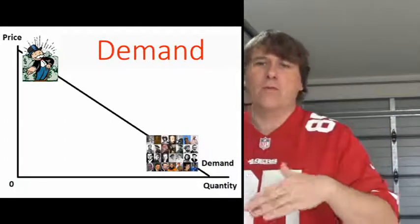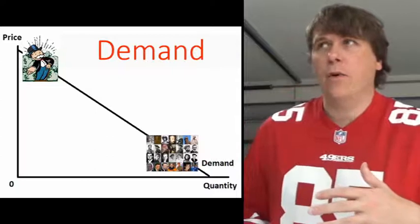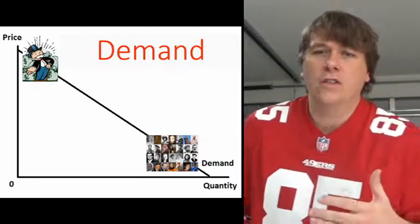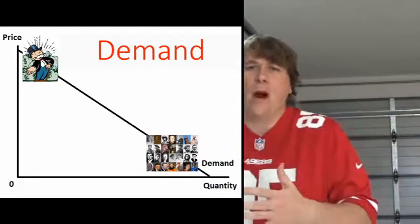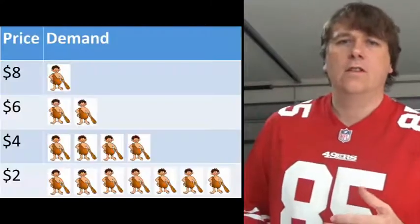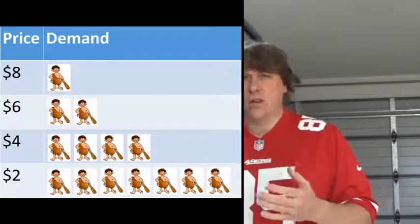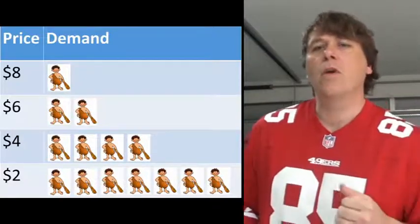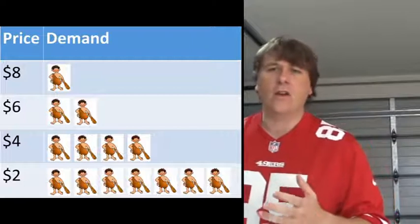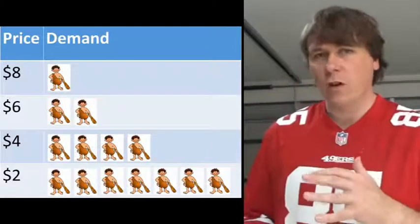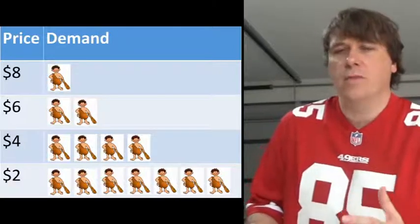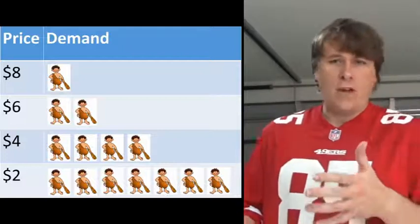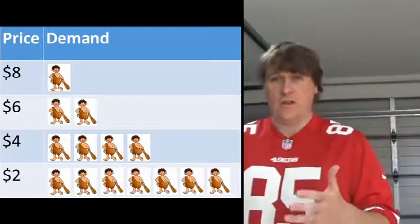As the price goes up, you have fewer and fewer people because people start dropping out. For example, I may have a willingness to pay for a banana of one dollar — if the price is one dollar ten, I wouldn't buy it; if it's ninety cents, I would. In this simple demand schedule, at a price of eight dollars you've got one person interested. As the price falls to six the number doubles, drop to four it doubles again, and down to two it doubles again.